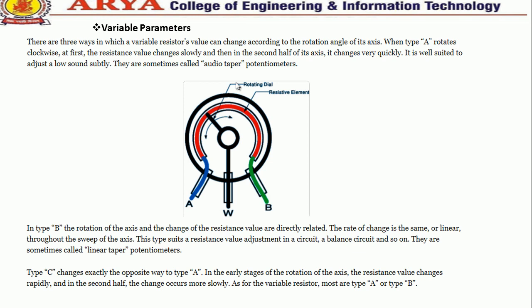Type A: when rotated clockwise, the resistance value changes slowly at first and then very quickly in the second half. These are sometimes called audio taper potentiometers. Type B: the rotation of the axis and the change of resistive value are directly related — the rate of change is the same or linear throughout the sweep of the axis.